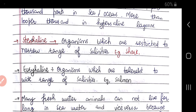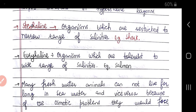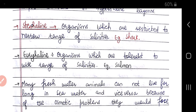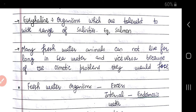On the basis of salinity, organisms can be classified as stenohaline or euryhaline — similar to stenothermal and eurythermal. Stenohaline organisms are restricted to a narrow range of salinity, for example sharks. Euryhaline organisms can tolerate a wide range of salinity, for example salmon.